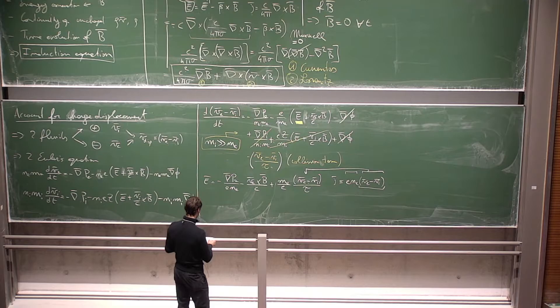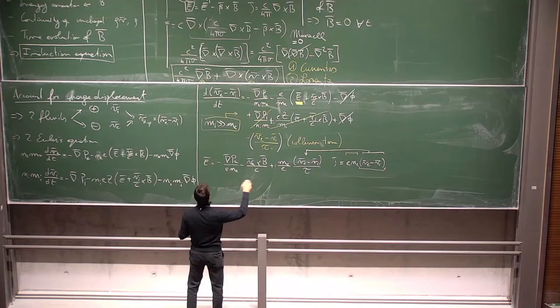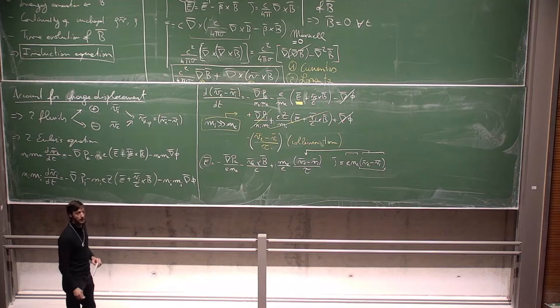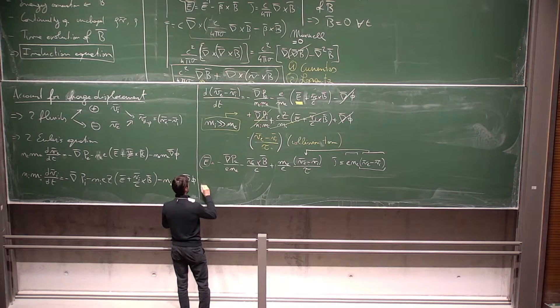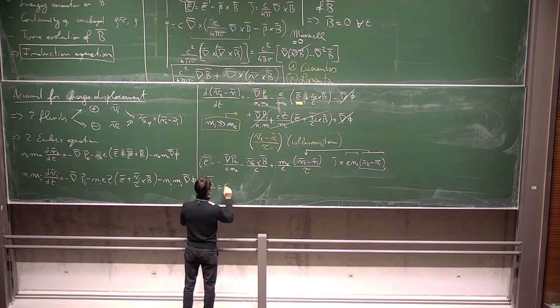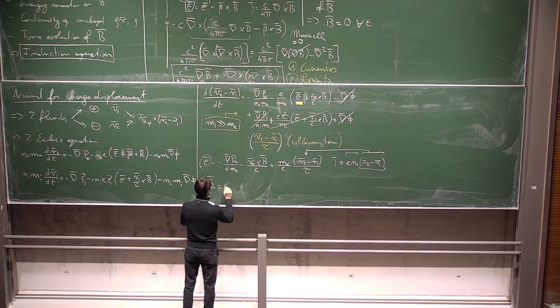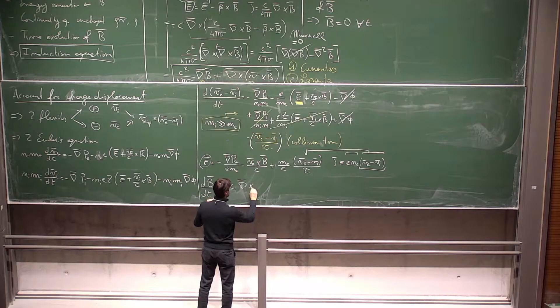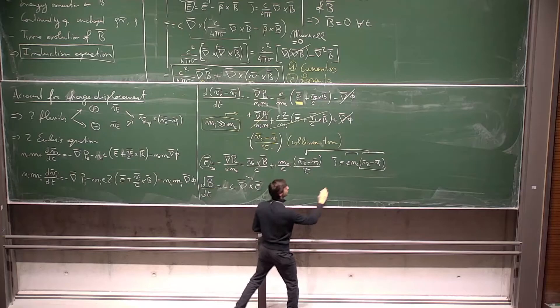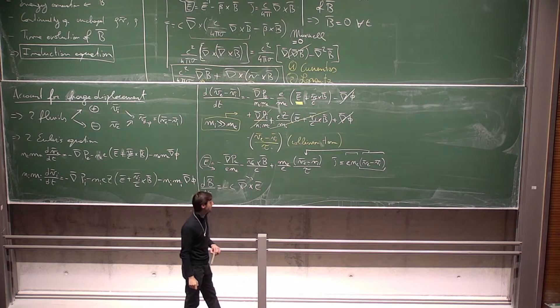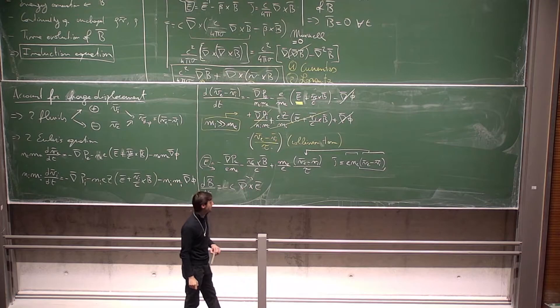We now plug this explicit expression for E — relating the electromagnetic field to the charge current created by particle displacement — into the induction equation dB/dt = -c ∇×E, and collect all the resulting terms.